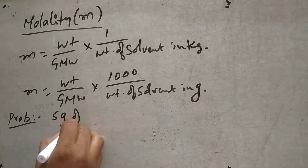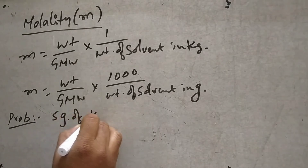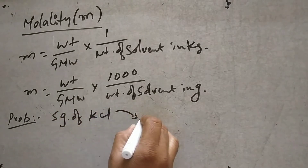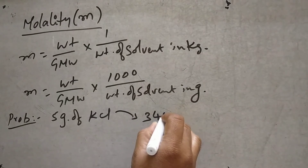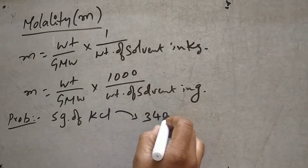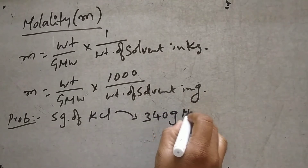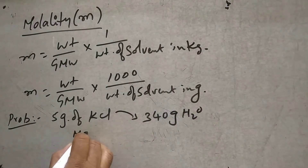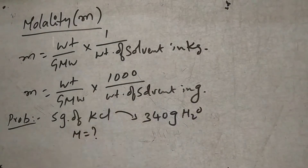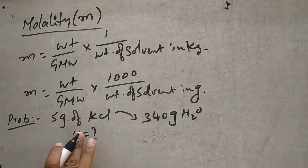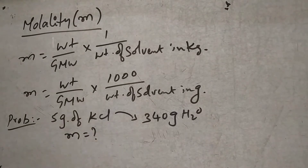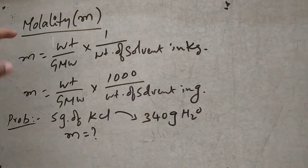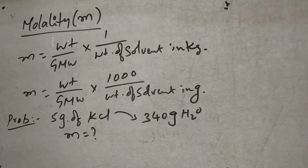Problem: 5 grams of KCl is dissolved in 340 grams of water. Calculate the molality of the solution. Note: capital M denotes molarity, and small m denotes molality.